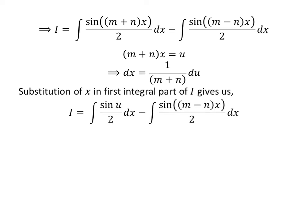Let us substitute m plus n times x by our assumed value u in the integral of sine of m plus n times x upon 2 with respect to x. So I is equal to the integral of sine of u upon 2, minus the integral of sine of m minus n times x upon 2.